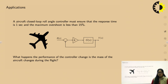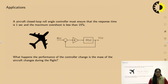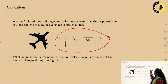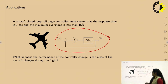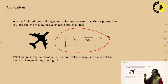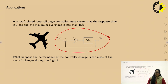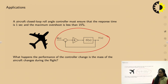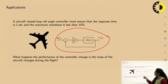For example, an aircraft closed loop roll anchor controller is designed to have a response time of 1 second and overshoot less than 15 percent. Now, what happens to the performance of the controller when the mass of the aircraft changes — as it is not the same when the flight takes off versus when it is landing, since fuel is consumed. So, the changing parameter is the mass — that is the fuel. What happens to the system, whether the system will remain stable or the response will remain the same, is an example of the root locus method.